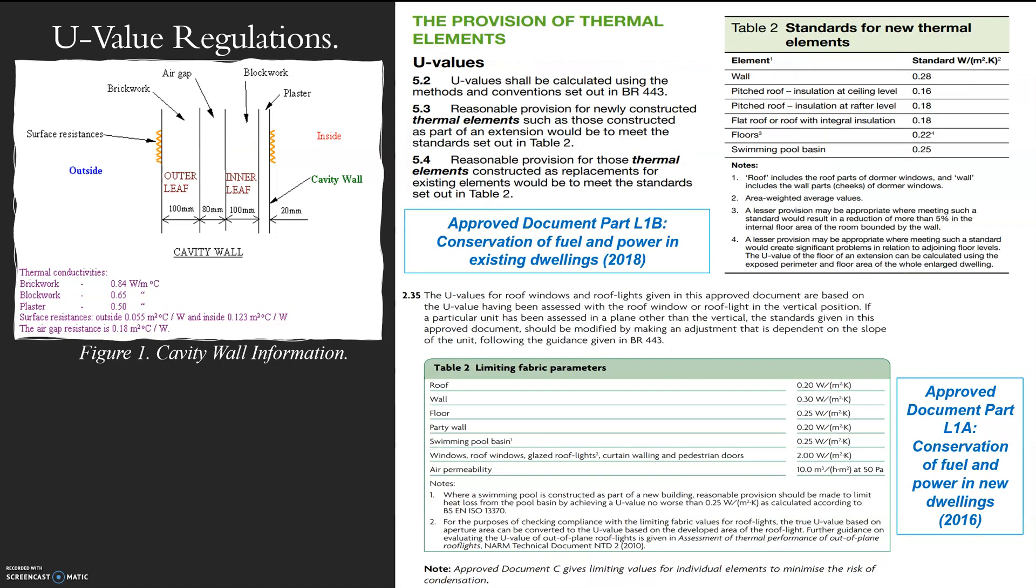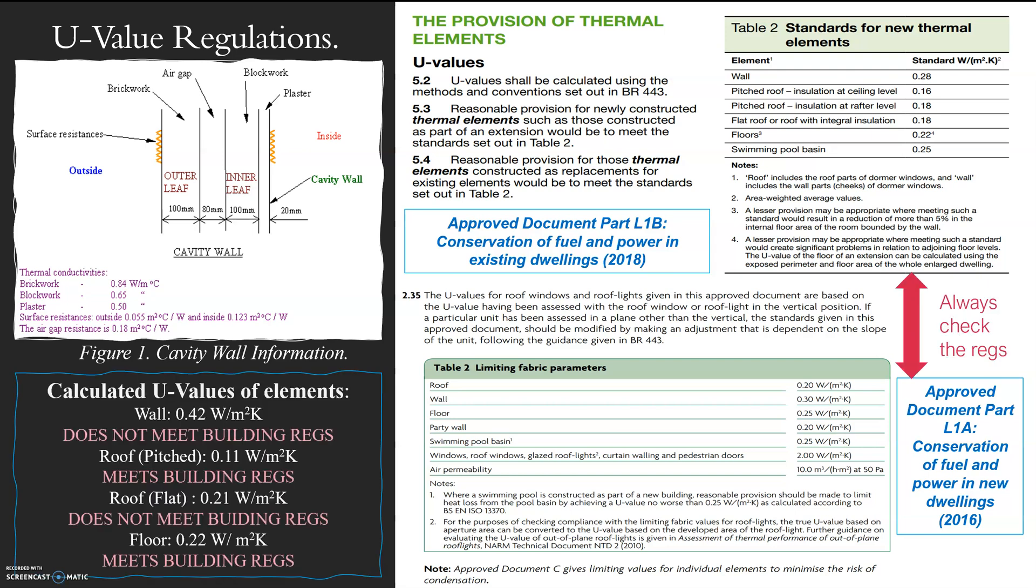And then very quickly, just looking at this concept, we have the regulations now. Very important always to check the regs because they do change. This part L1B proof document is 2018. L1A is 2016. L1B is for existing dwellings and L1A is for new dwellings. So if you have a look, the wall is different. 0.28 is your minimum for that and 0.3 is your minimum for that one. So just be very aware that I've got calculated U-values of elements here. Some of them meet the regs and some of them don't.